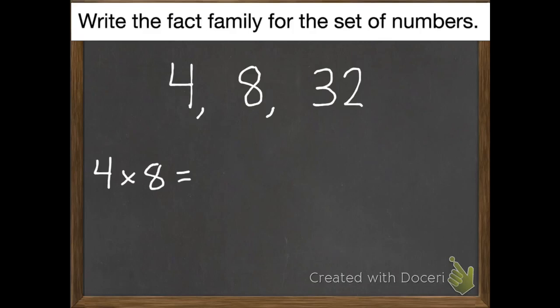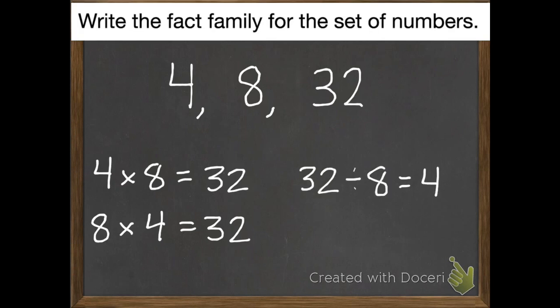Okay, the answer is 4 times 8 equals 32, 8 times 4 equals 32, 32 divided by 8 equals 4, and 32 divided by 4 equals 8.